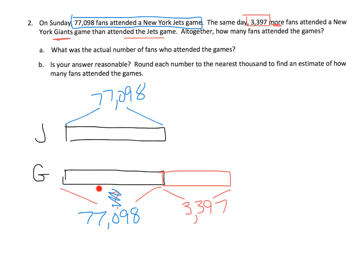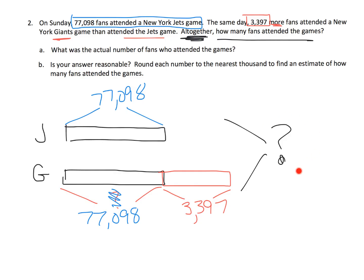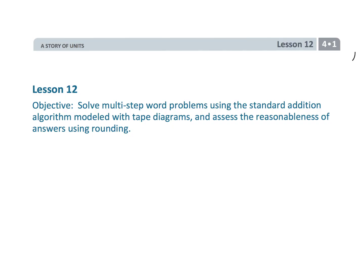So do I know the entire length of the Giants tape? Sure — I just have to add. The Jets length was given: 77,098. The question asks altogether how many fans attended both games, so we want the whole combined total. You could first add 77,098 plus 3,397 to get the Giants total, then add in the Jets; or you could add it as three separate numbers: 77,098 plus 77,098 plus 3,397. Both options give us the total. I'm not going to show the actual addition because in this lesson the important thing is drawing the tape diagrams. And that wraps up fourth grade module one lesson 12 — using tape diagrams to solve word problems.